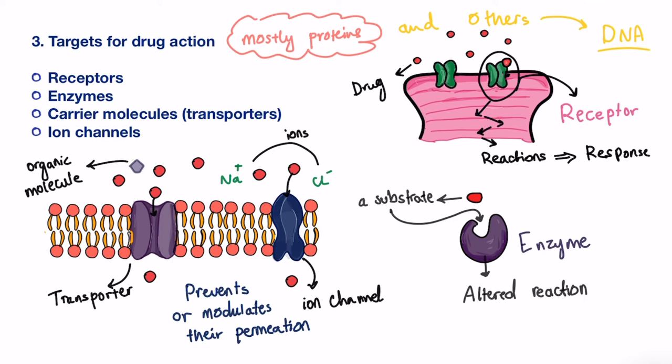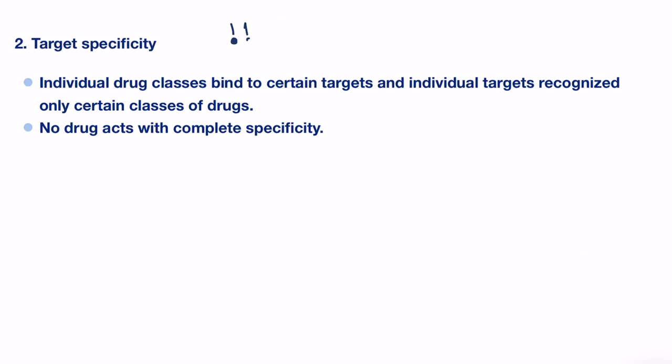Now since we covered that a drug carries out its action by binding to a particular target, you might wonder what makes a drug able to recognize its target from all the components inside our crowded body. Well, the answer in fact lies in the principle of target specificity, which states that for a drug to be useful as a therapeutic tool, it must show a high degree of target site specificity.